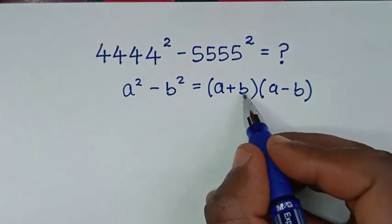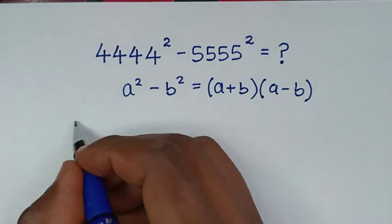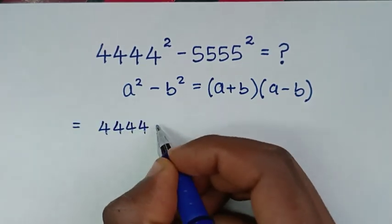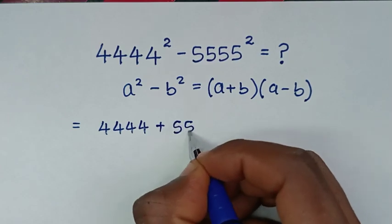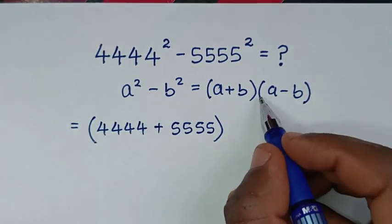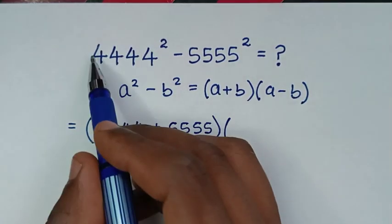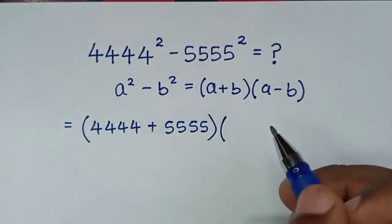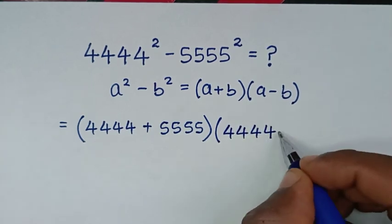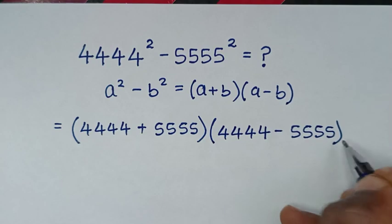For (a + b), it will be this plus this, so it will be equal to (4,444 + 5,555). Then times (a − b), it will be this minus this, so here it will be (4,444 − 5,555).